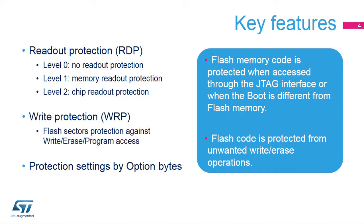The second kind of memory protection available in STM32F7 is the write access protection. Unlike RDP, write protection is not global, but is set on specific memory sectors of the flash memory. Write protection prevents accidental or malicious write or erase operations. Both protection mechanisms are configurable via the STM32F7 option bytes.